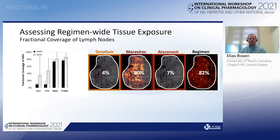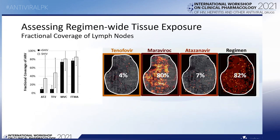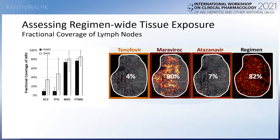We can further evaluate the proportional coverage of the tissue cross-section by each drug, as well as the regimen overall, with values shown for the individual section and summarized for lymph nodes from a cohort of healthy and infected animals to provide context for variability in total tissue exposure.